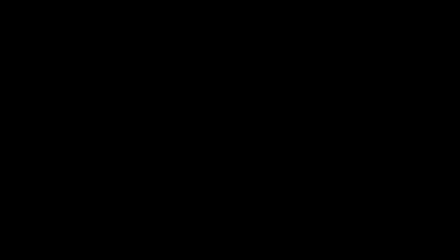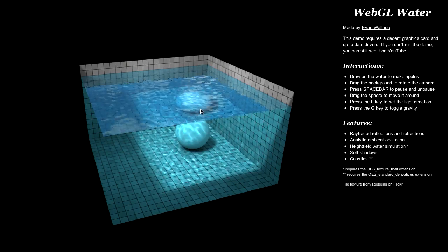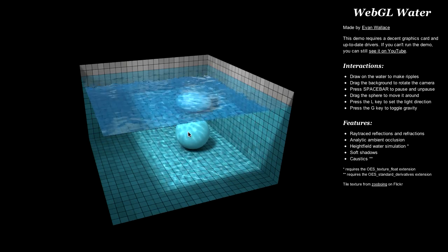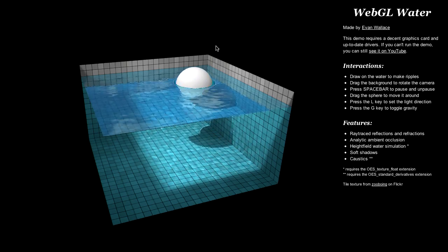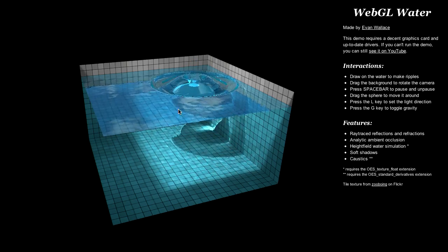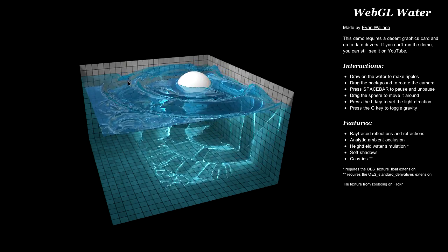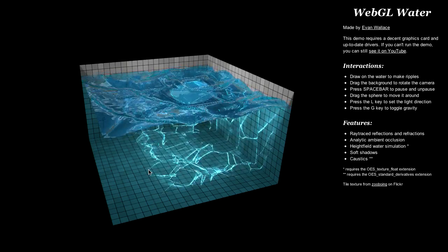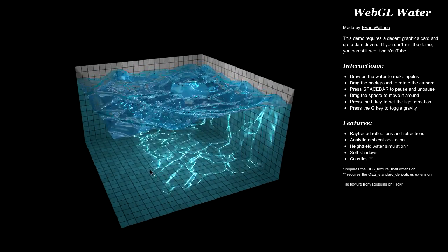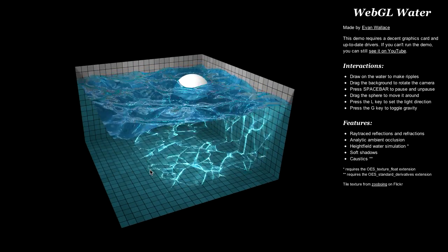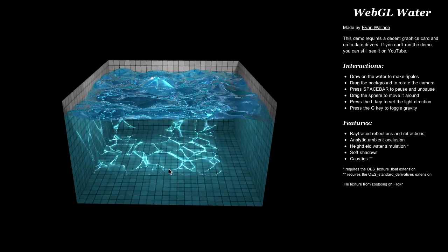What about something harder like 3D? This is an example running live in the browser — a very complicated scene with complicated physics. I can make ripples in the water, with very complicated lighting effects. This is running directly in the browser with no plug-ins — it's JavaScript and WebGL. Really amazing stuff.